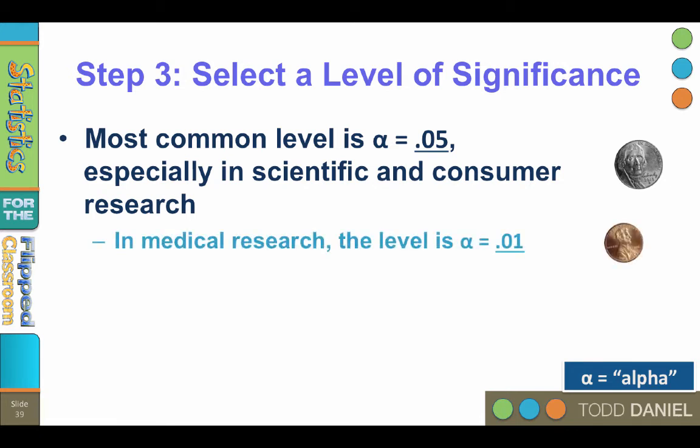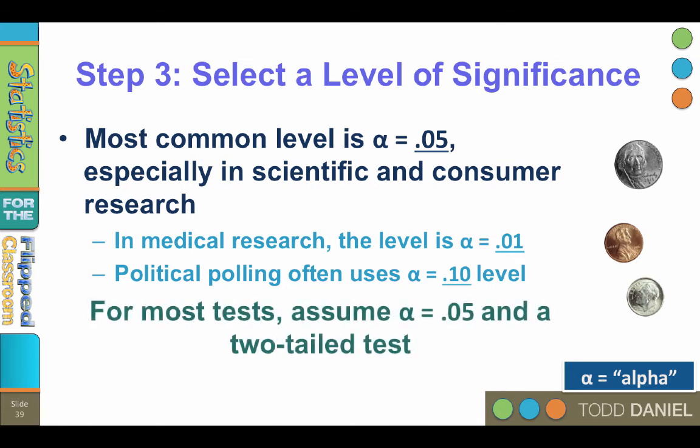In medical research, where the quality matters more and the consequences for mistakes are higher, the alpha level is often set to .01. Following our analogy, .01 would be 1% or a penny. Political polling often uses a .10 level because their results are not as dire if they're wrong. This .10 level is analogous to 10% or a dime. For most tests, assume alpha equals .05 and a two-tailed test.